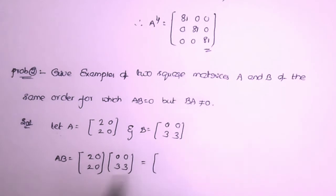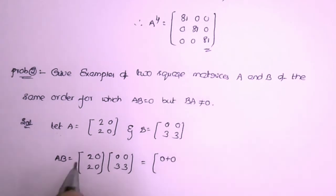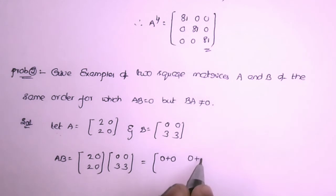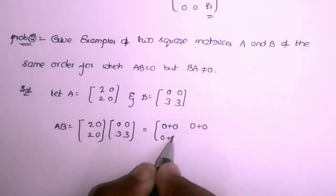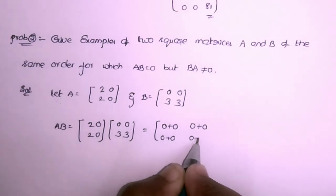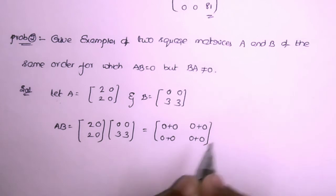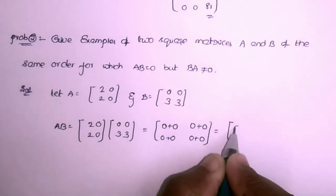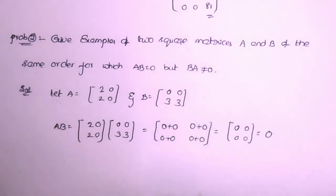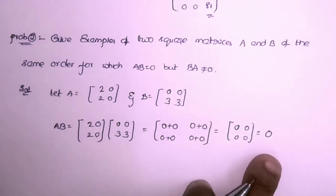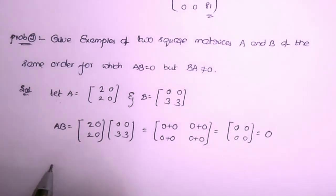Multiplying the matrices: first row by first column: 2×0 + 0×3 = 0; first row by second column: 2×0 + 0×3 = 0; second row by first column: 0×0 + 0×3 = 0; second row by second column: 0. So AB = [[0,0],[0,0]], which is the zero matrix.